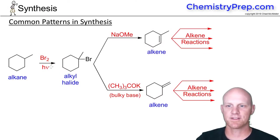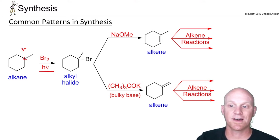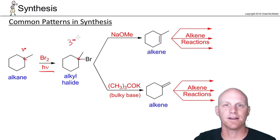All right, next common pattern we'll see in synthesis. In this first step here, I've got an alkane, and the only thing you can do is brominate it. It will prefer the most substituted carbon, so it'll place the halide on that tertiary carbon. And here we'll then have a tertiary alkyl halide.